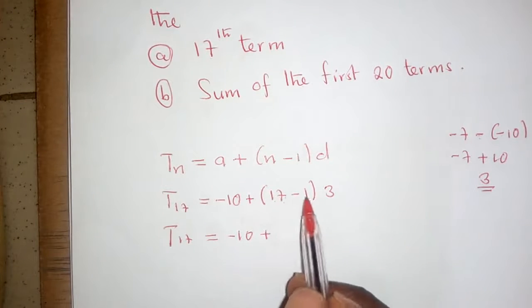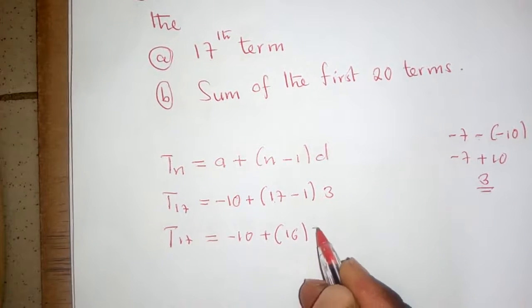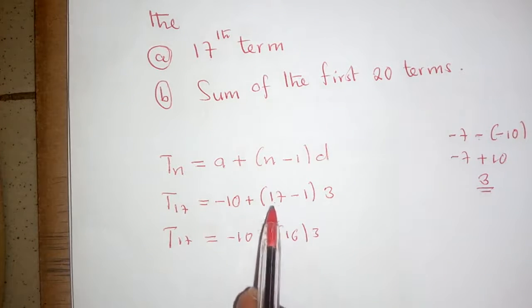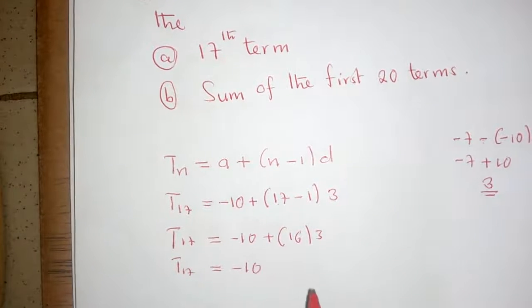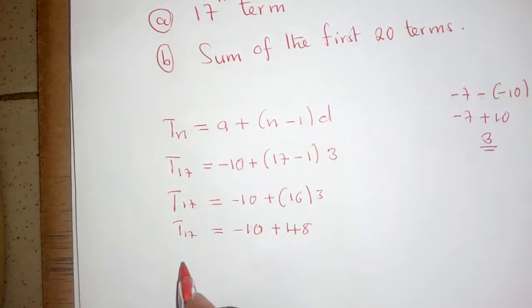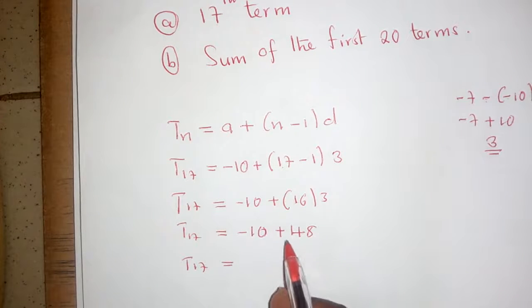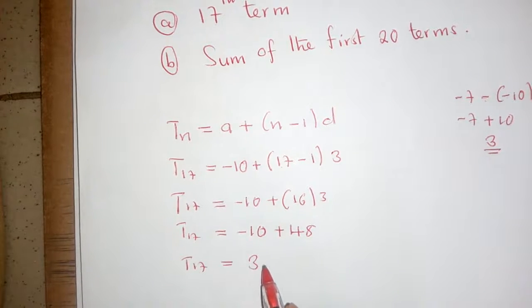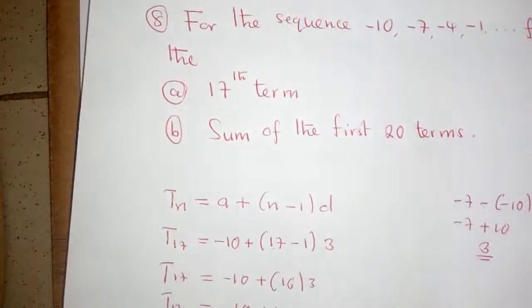Inside the brackets, 17 minus 1 equals 16. Then 16 times 3 equals 48. Finally, negative 10 plus 48 equals 38. So the 17th term is equal to 38.